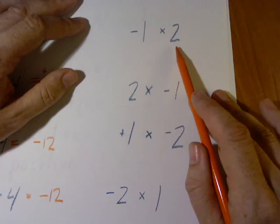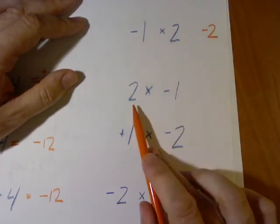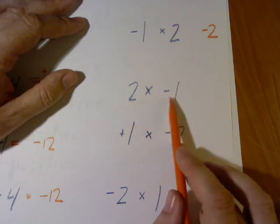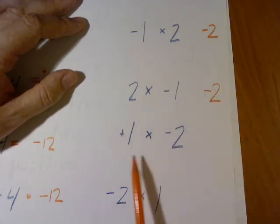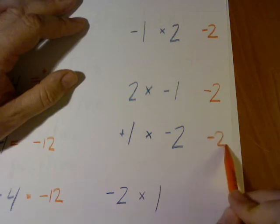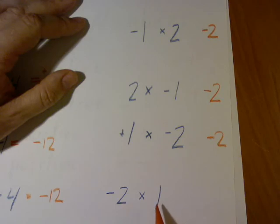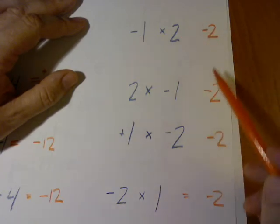Negative 1 and 2? Negative 2. 2 and negative 1? 2 times negative 1? The answer is negative 2. 1 times negative 2? Negative 2. Negative 2 times positive 1? Negative 2. If there is one negative and one positive, it's always negative.